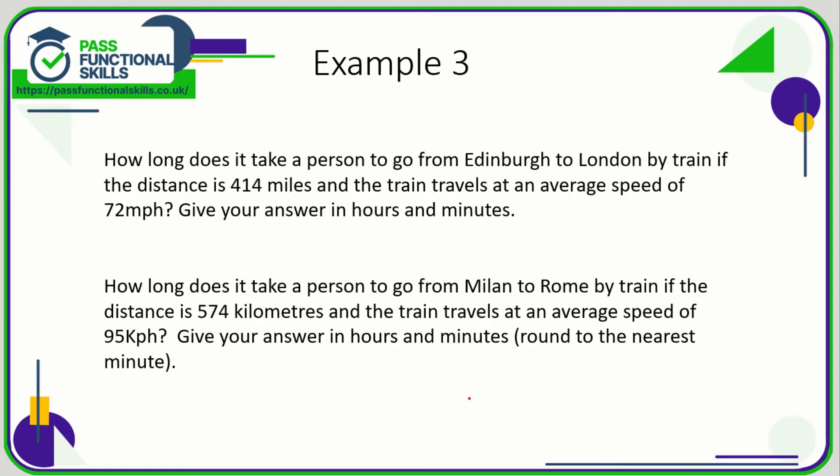Let's take a look at some more examples. So here these are about time. Speed is distance over time, so time is the distance divided by the speed. Here the distance is 414, the speed is 72, so the answer is simply 414 divided by 72, but we've got a slightly problematic answer: 5.75 hours.